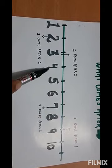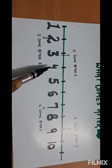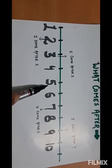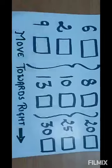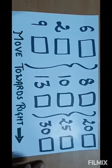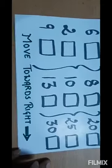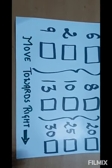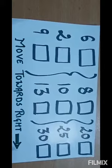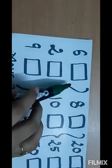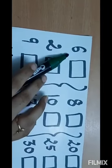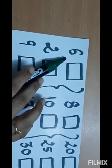Ten comes after nine. What comes after three? Four comes after three. What comes after four? Five comes after four. Now let's do the worksheet based on our understanding. Always remember to move in the right direction.